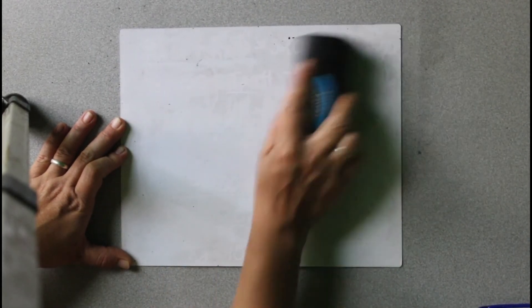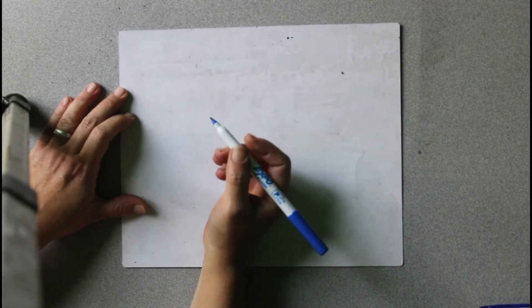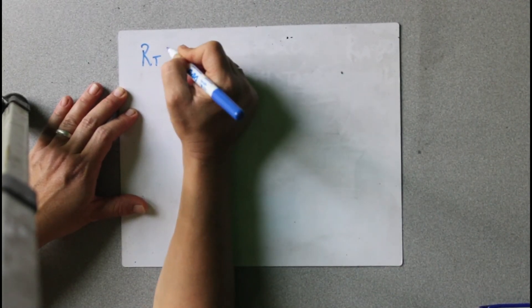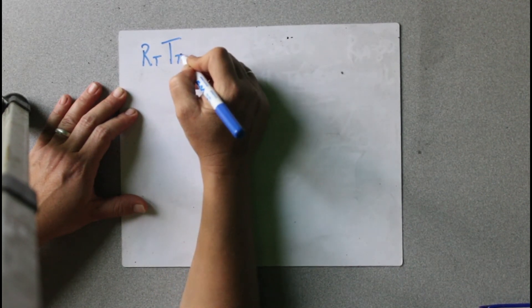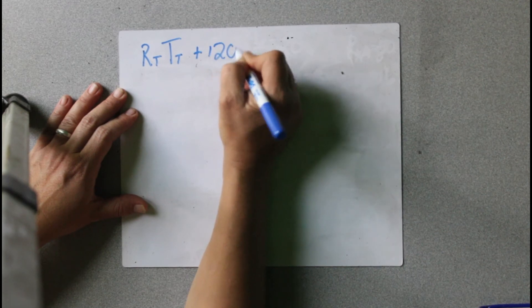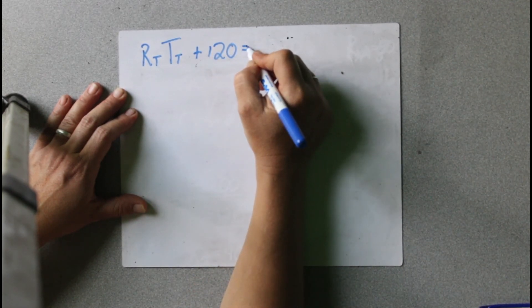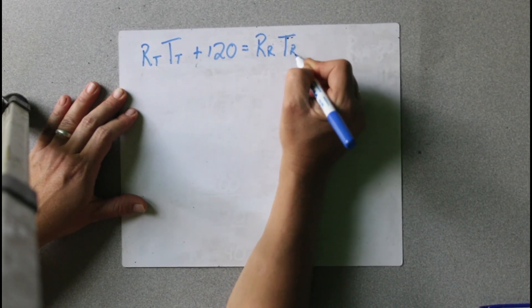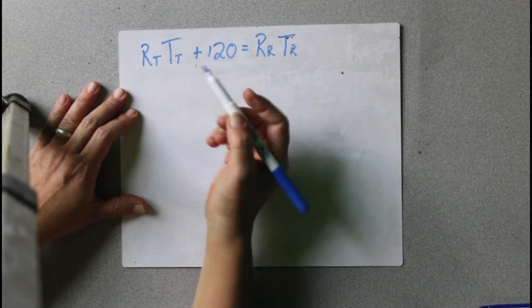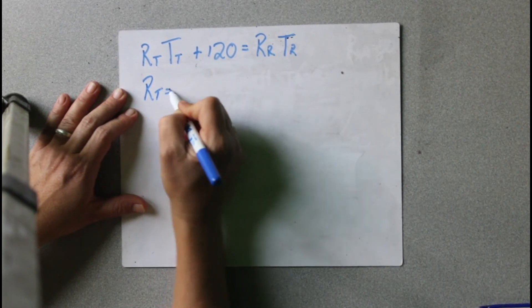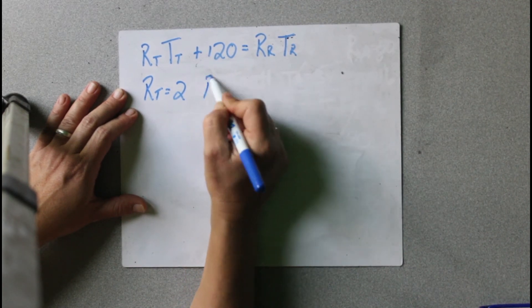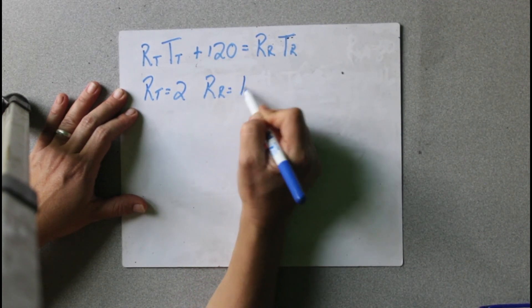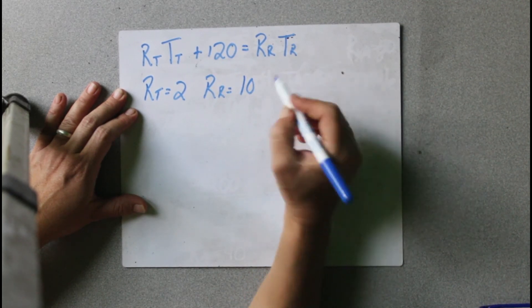Let's try another one. The next one says RT times TT plus 120 equals RR times TR. And then the other values they give us: RT equals 2, RR equals 10, and TT equals TR.